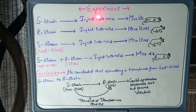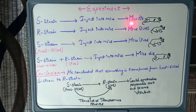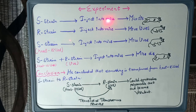Now let us look at the experiment performed by Griffith. In the first part, Griffith introduced S strain into the mice, and as a result the mice died. Because S strain is virulent, injecting it into the mice causes them to die of pneumonia.